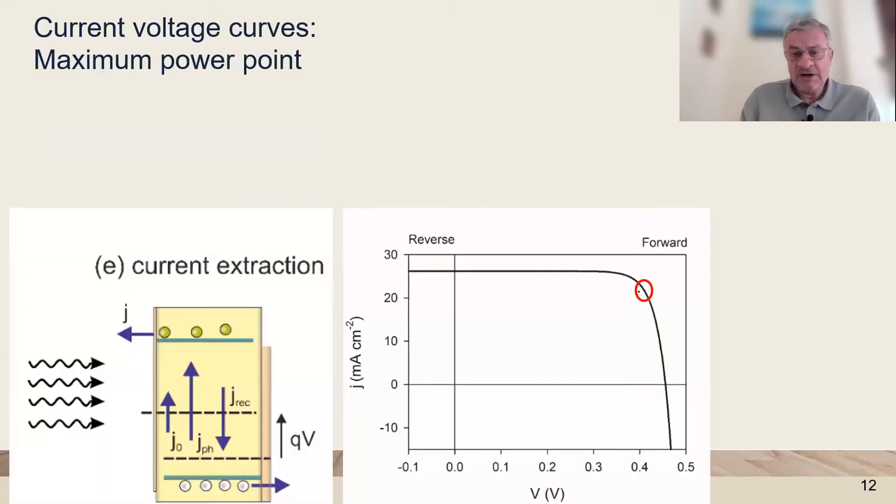We define the maximum power point and here the current and voltage are not at the maximum. We are at an intermediate voltage and intermediate current but here the power extracted is maximum.